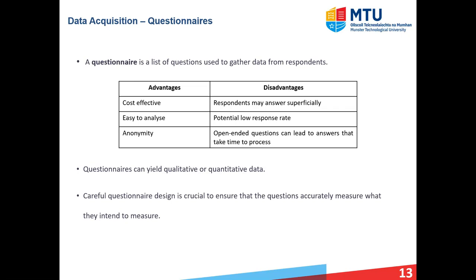Disadvantages of questionnaires include that respondents may answer superficially, just to get it out of the way. There can also be a potential low response rate, which designers need to think about. Finally, a big issue is that researchers really need to think about the questions they set, avoiding open-ended questions which can be difficult to process and analyze. Questionnaires can yield both qualitative and quantitative data depending on the question type, and it's important to take time designing your questionnaire to ensure honest and accurate responses.